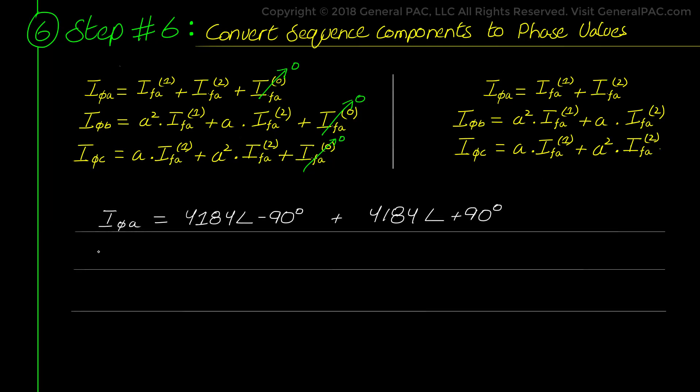Now after plugging in the value of 1 at angle 120 degrees for the a operator and 1 at angle 240 degrees for the a squared operator, the 4184 amps at angle of negative 90 degrees for the positive sequence current, and 4184 amps at the angle of positive 90 degrees for negative sequence current, what we finally get is the following.